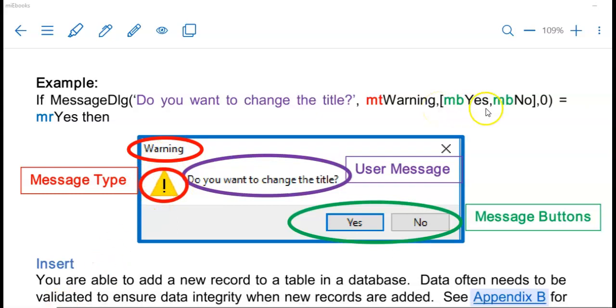Then a comma and my third argument here goes in square brackets. And this is what determines the buttons that appear on this message dialogue box. So MB stands for message button. And I'm going to have a yes in this example and a no button. And that is how these two buttons appear on the message dialogue box. And then you can just put a comma zero there at the end as it needs that fourth argument.